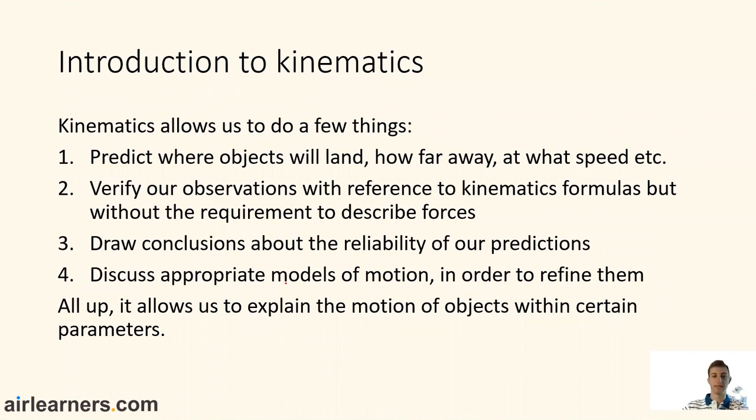A little bit of an introduction. Kinematics allows us to do a few things. It allows us to predict where objects land, how far away, what speed and so on. It allows us to verify our observations with reference to these formulas, and because kinematics is only about the path of the object, it doesn't require us to describe the forces behind it. It allows us to draw conclusions about the reliability of our predictions and discuss appropriate models of motion so we can refine them. So it's a really good way of explaining the motion of objects within certain parameters.